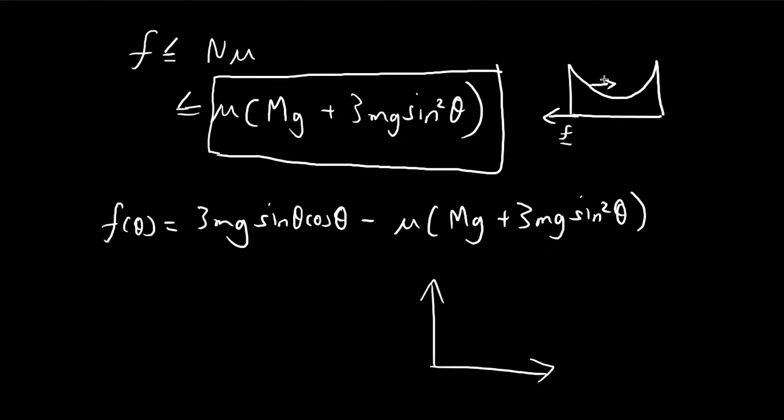So this friction is going to keep varying according to how strong this normal force is. But for this function, because we know that friction always has to be smaller than this expression, this is the largest possible friction.